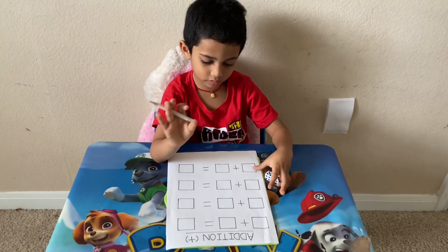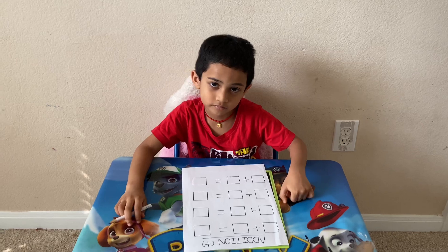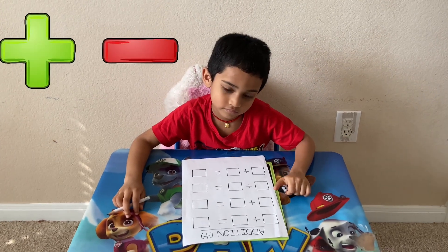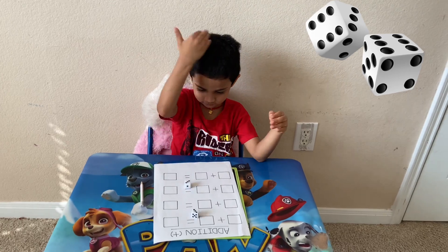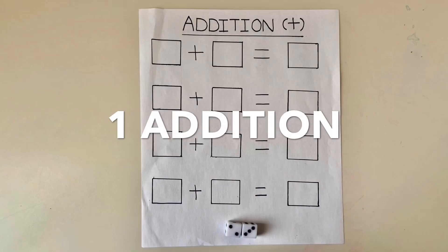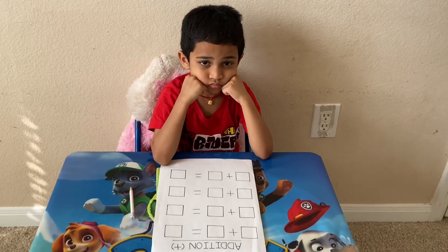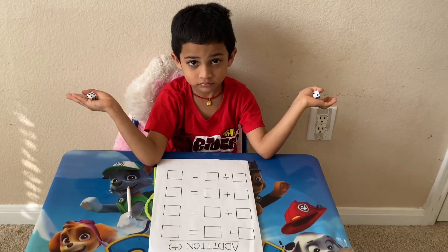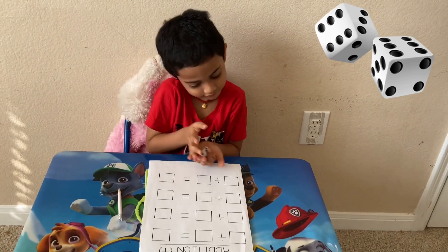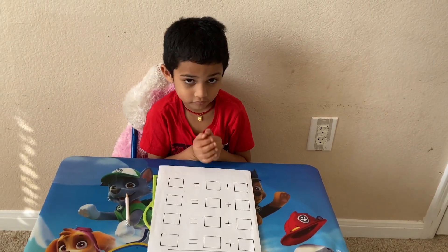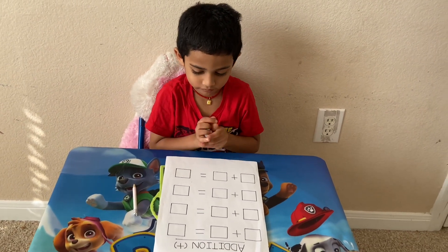Hello friends, today welcome back to my channel. Hi Haran! Today we are going to do addition and subtraction by rolling the dice. The first activity is addition. First roll the dice — show me your dice, you got two dice right? First roll the dice, then write the number, then add them. Okay, start!